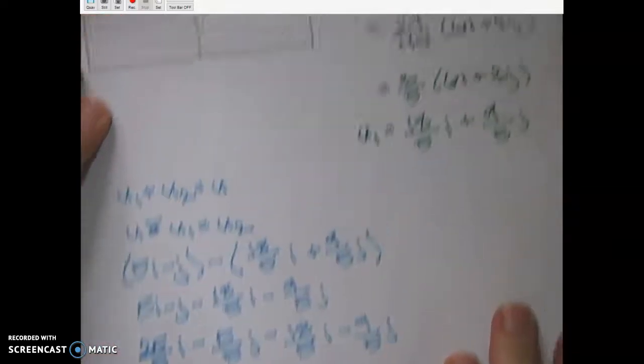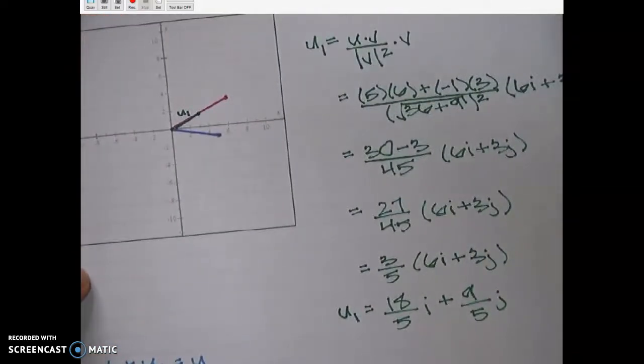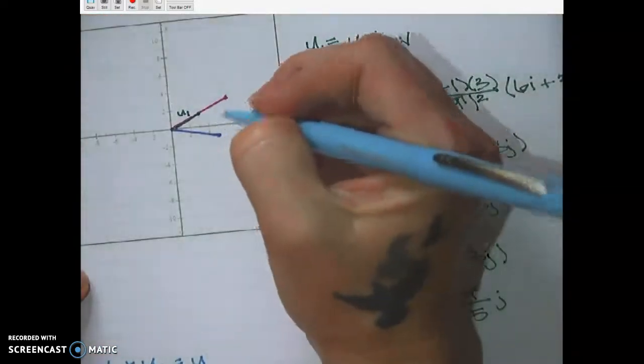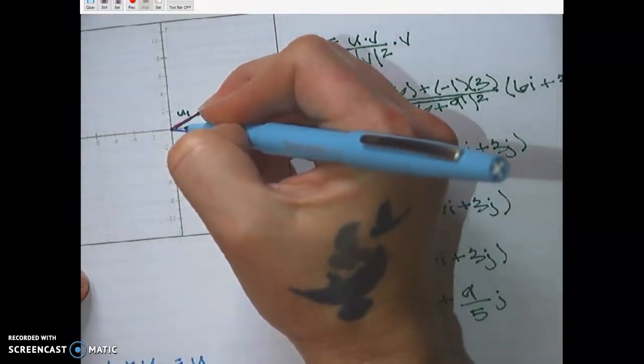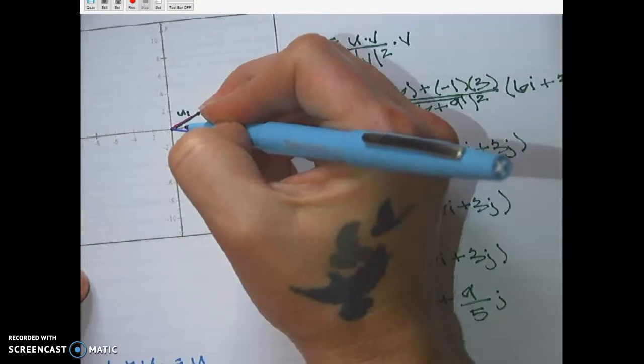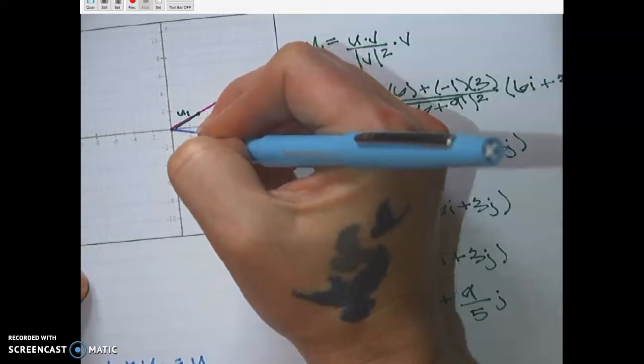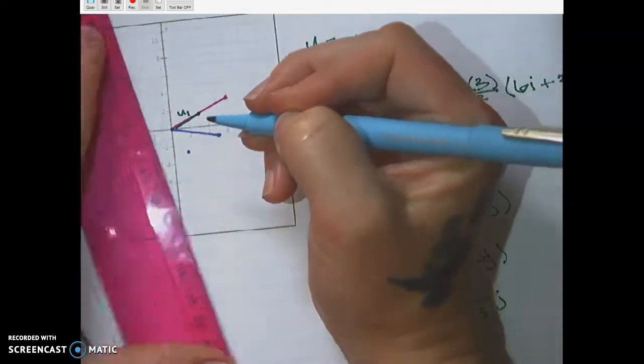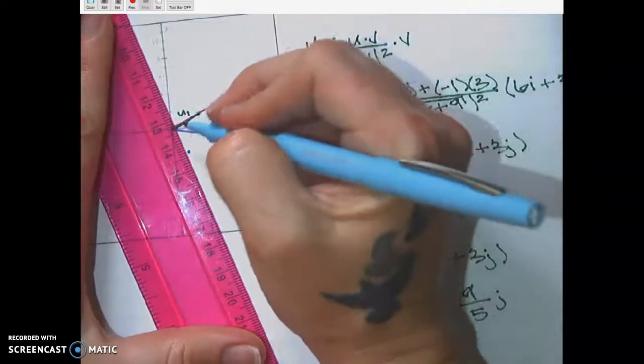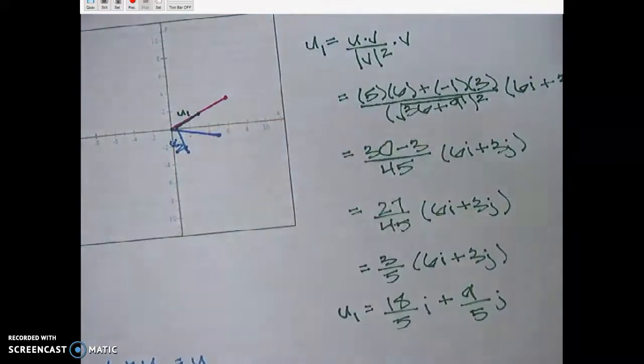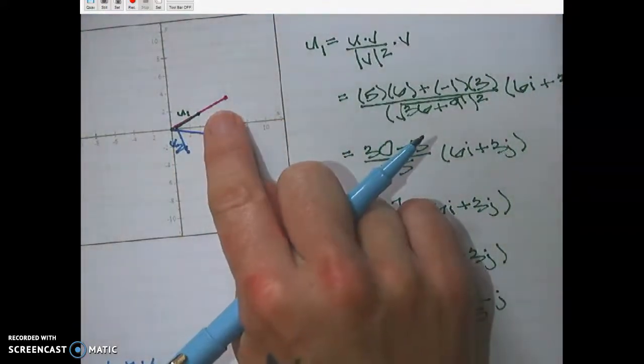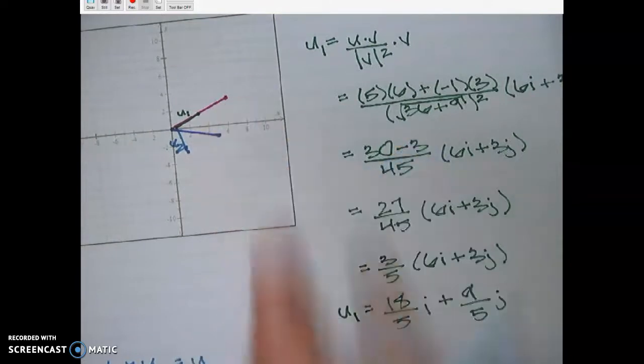And if I want to see where that would be on my graph, let's see, 7 fifths is just 1 and a little bit, right? And then 14 fifths minus 14 fifths is down almost 3. So you can see, when I do that, there's my u2, and it is indeed perpendicular to v. Remember this purple guy was perpendicular.